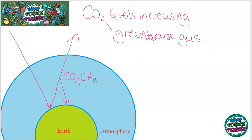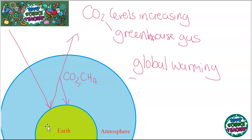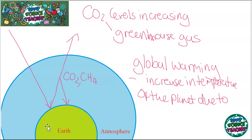Because carbon dioxide is such an effective greenhouse gas, just small percentage changes can have massive effects on the global temperature. The effect we're seeing now is called global warming, and that is the increase in temperature of the planet due to the greenhouse effect.